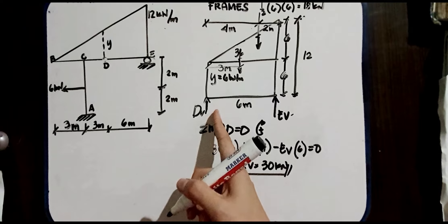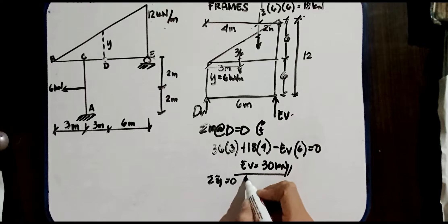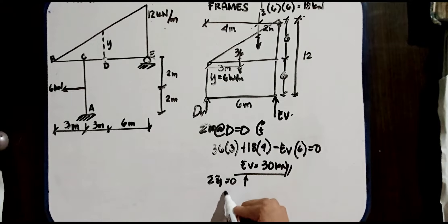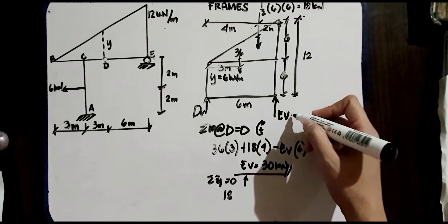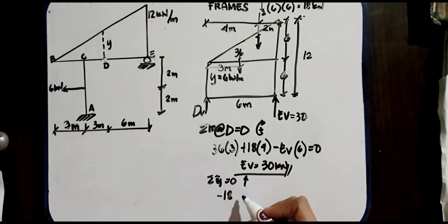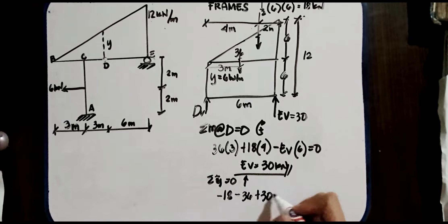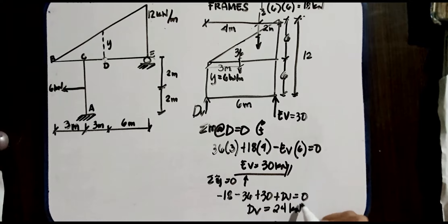Next, we find DV by summation of vertical forces equal to 0, with upward positive. We have −18 − 36 + 30 + DV = 0. Therefore, DV = −18 − 36 + 30 = −24, so DV is 24 kN.